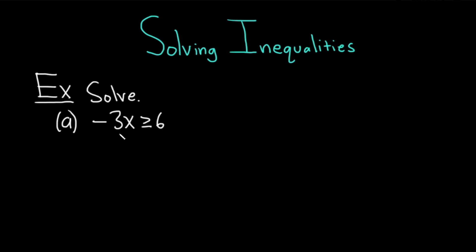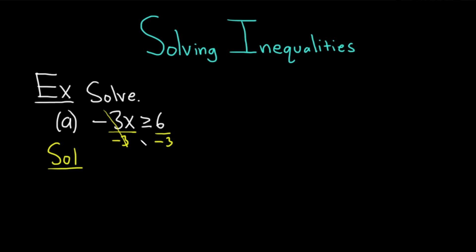In part A, we have negative 3x greater than or equal to 6. The goal here is to isolate the x term. Because it's being multiplied by negative 3, we're going to divide both sides by negative 3. The minus 3s cancel, and whenever you divide by a negative number, you reverse the inequality sign. So it'll become x less than or equal to negative 2.